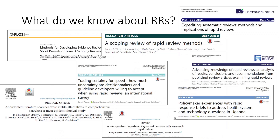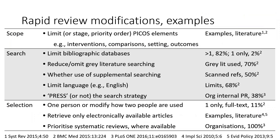Various articles exist about rapid reviews, and the majority characterize or discuss rapid review methods and approaches. Some evaluate rapid review methods either at specific steps of conduct or looking at the whole process, but there is a real need for more empirical evidence to inform the impact of abbreviated methods. The following slides outline some examples of modifications that can be used during the conduct of a rapid review, with the column to the right providing a sense of frequency or support from available literature.